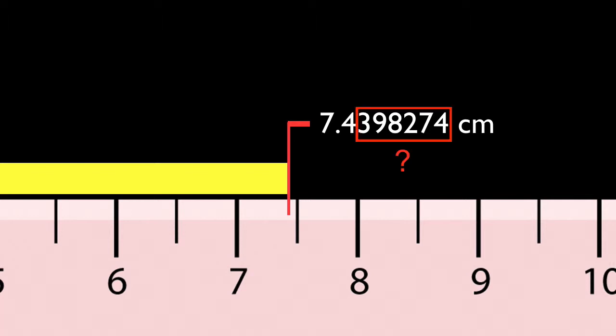Your measurement can only be as good as your instrument allows. With this ruler, we can be pretty sure the length is 7 centimeters. You can even make a reasonable guess of 7.4 centimeters.